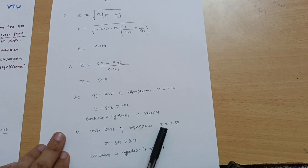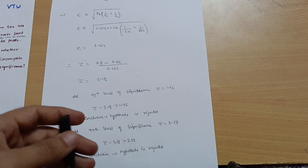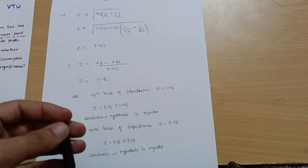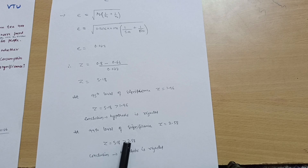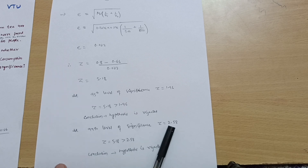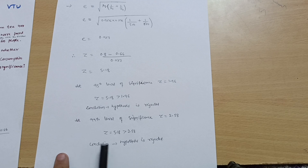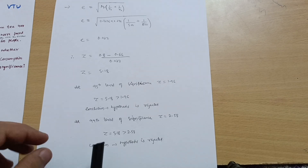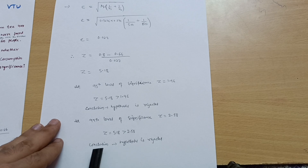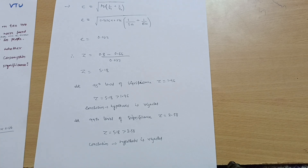At the 99% level of significance, the standard critical value is Z = 2.58, which is provided in the handbook. Since Z = 5.18 is also greater than 2.58, the hypothesis is rejected at the 99% level as well. Therefore, there is no significant decrease in the consumption of tea.